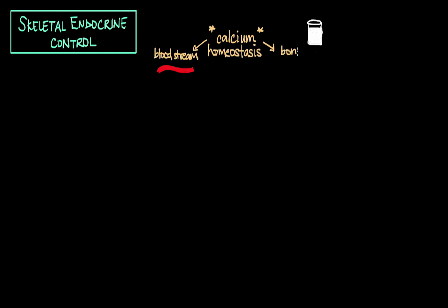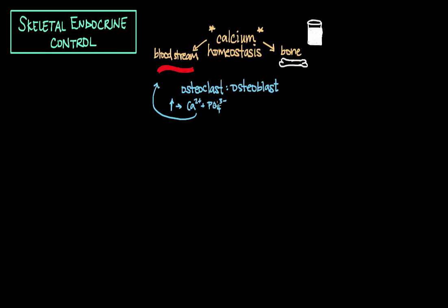Calcium homeostasis, or the flow of calcium between the bloodstream and bone, is actually under endocrine or hormonal control. These hormones alter the ratio of osteoclast activity to osteoblast activity. As osteoclast activity increases relative to osteoblast activity, there is an increase in the liberation of calcium and phosphate from bone into the bloodstream. The opposite is true if the ratio reverses — as osteoblast activity increases, calcium and phosphate go from the bloodstream back into bone.